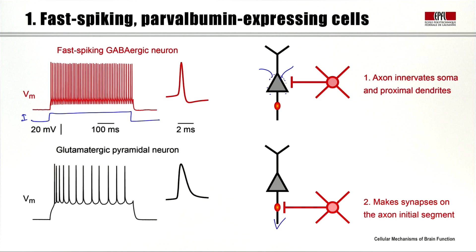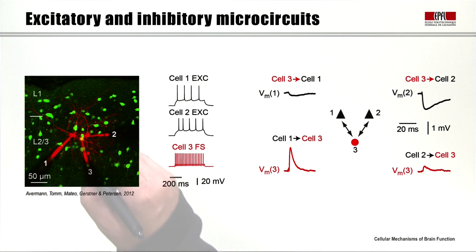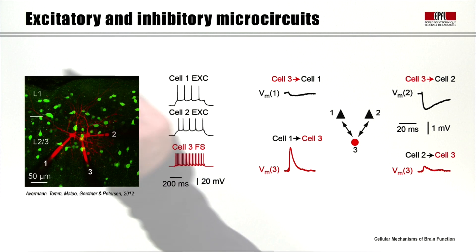The parvalbumin-expressing GABAergic neurons, especially the soma and proximal dendrite targeting basket cell type, form the largest family of GABAergic neurons in the neocortex. We can study the connectivity of these fast-spiking parvalbumin-expressing GABAergic neurons in brain slices, where we can record from different neurons simultaneously and initiate action potentials in different cells to study their synaptic connectivity.